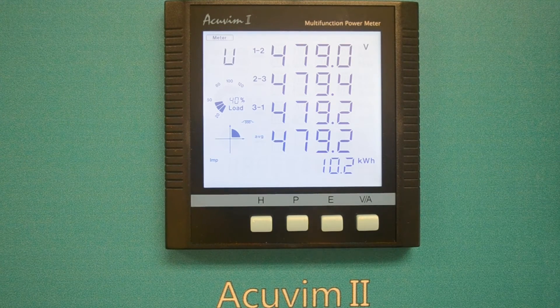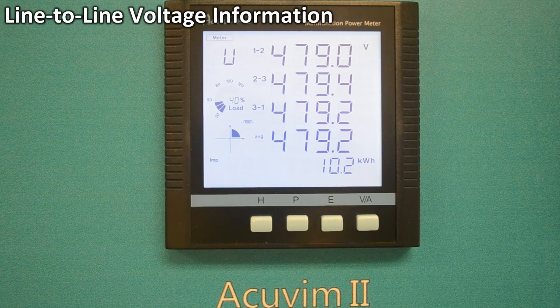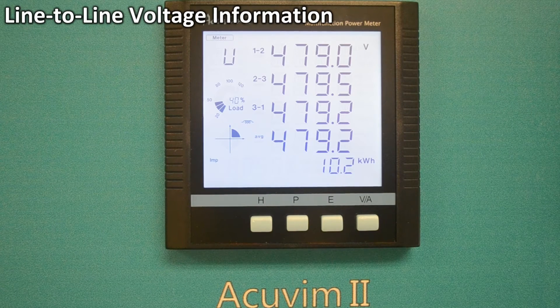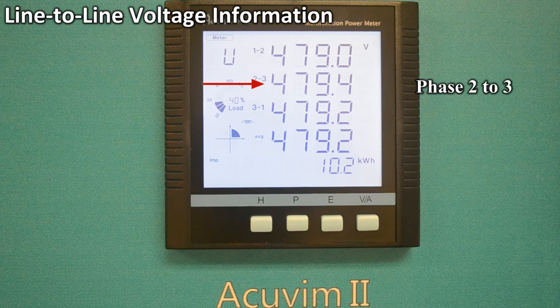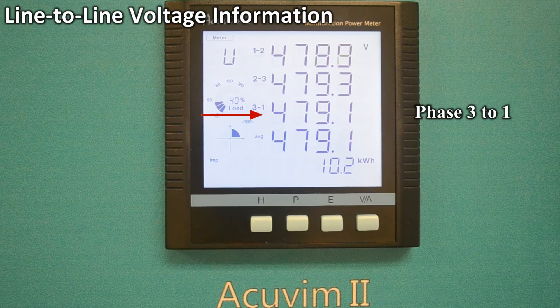For voltage parameters, you can see the line-to-line voltage information such as phase 1 to phase 2, phase 2 to phase 3, phase 3 to phase 1 voltages.